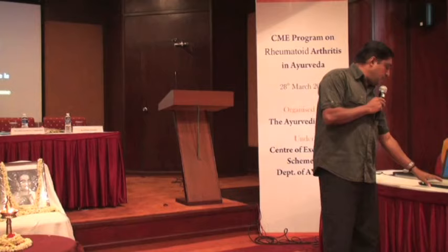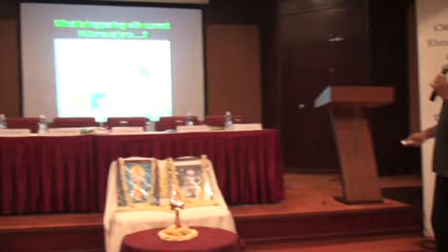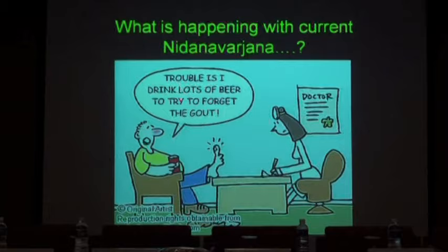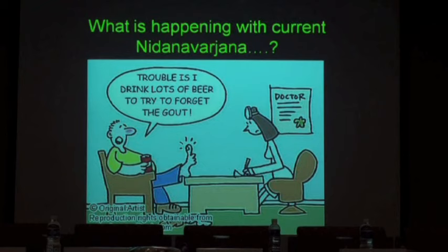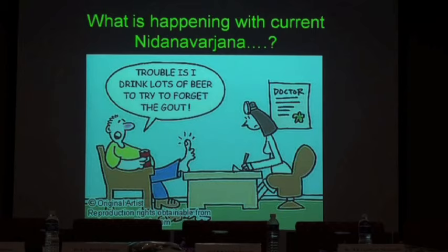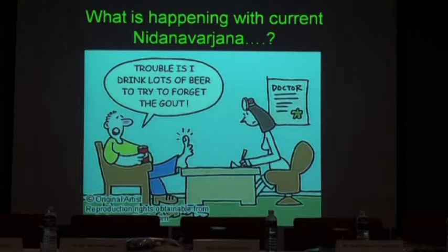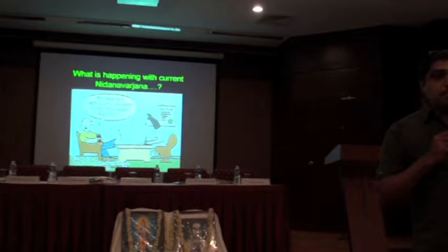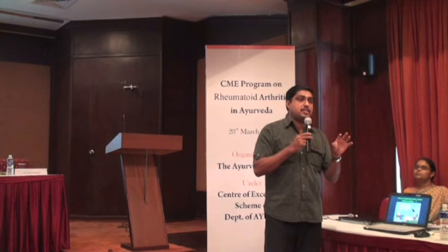The cartoon illustrates what is happening with current Nidana Parivarjana — someone with good episodes of pain says, 'Trouble is I drink lots of beer to try to forget the gout arthritis.' Gout arthritis is caused by purine metabolism error, and all beverages including alcohol, Vidahi Annam, and Viruddha Ahara mentioned in our science precipitate arthritis. We are using analgesics without consulting doctors — even steroids — and these things done as Nidana Parivarjana are actually becoming Nidana, becoming Viruddha Ahara, becoming Vidahi Ahara. Please pay attention that you are doing the right Nidana Parivarjana.